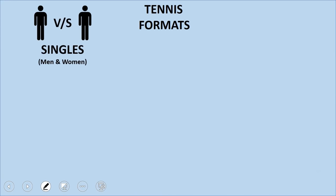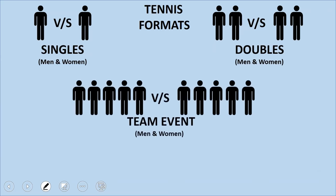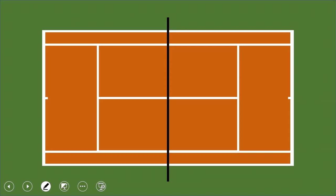Tennis can be played as singles (one versus one), doubles (two versus two), or a team event which is a combination of singles and doubles — it can be four singles and one doubles or any combination. There's also mixed doubles where a man and a woman play against another man and woman.